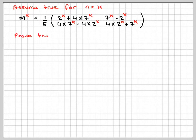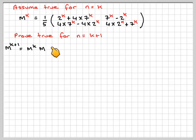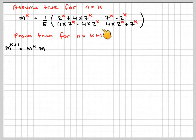Now we have to prove that it's true for n equals k+1. To get M to the k+1, we need to multiply M to the k — our inductive assumption — by the original matrix given in the question. What we need to aim for is: instead of having k in all those entries, they all now need to become k+1. Then we've proved it's true.